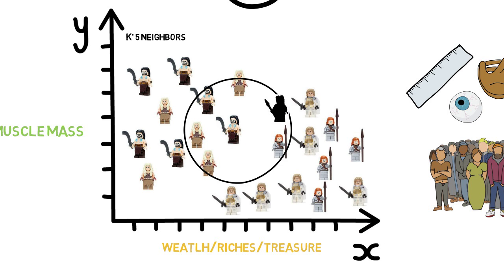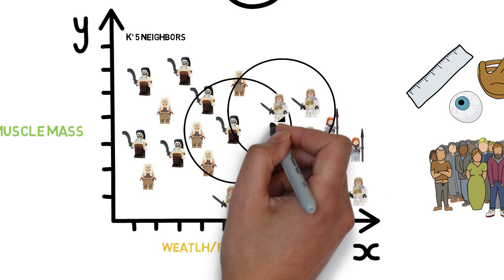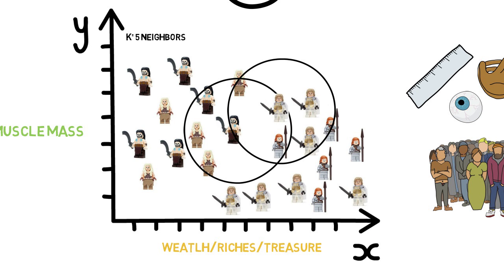If we take the second example and draw a circle around here, we can classify our unknown to be a Westerosian based on majority vote. Quite simple and easy to understand, it is important to note that K should always be an odd number to avoid a draw in the votes.